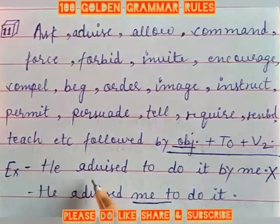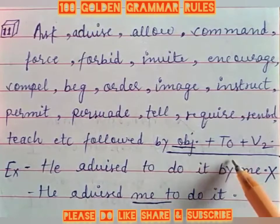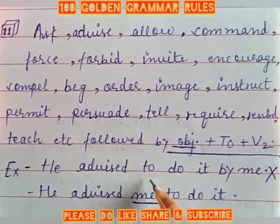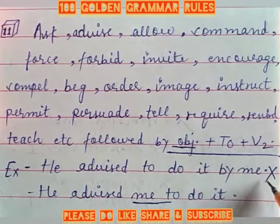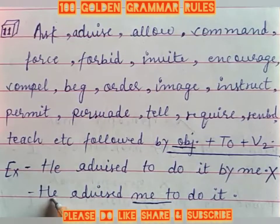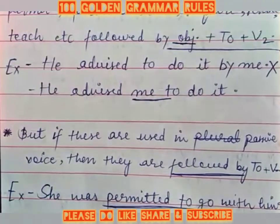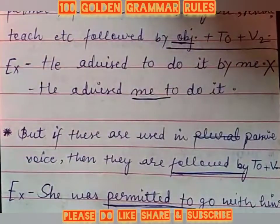For example, 'He advised to do it by me' — which is incorrect, because the correct format should be object plus 'to' plus verb second form. So the correct structure is object + 'to do it'. This is the correct format for these verbs.